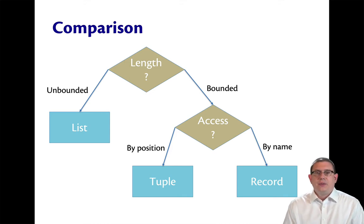What's the length of the data? If it's an unbounded length, then you might want a list, because lists are unbounded. But tuples and records have bounded length. They have a certain number of components or fields.